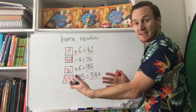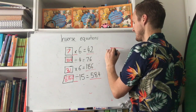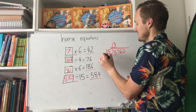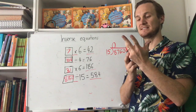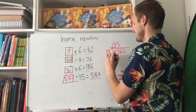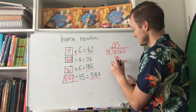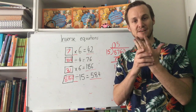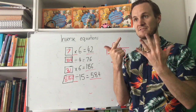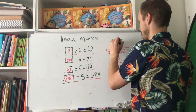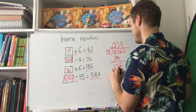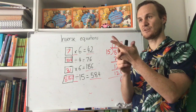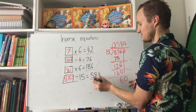Once you've got an answer you go back and make sure it actually makes sense by trying it out. So we do 15 into 8,760. 15 goes into 87 five times (75), leaving 12; bring down 6 to make 126 — 15 goes into 126 eight times (120), leaving 6; bring down 0 to make 60 — 15 goes into 60 four times. That gives us 584. Beautiful — it checks out!